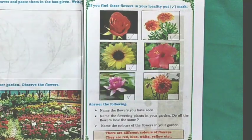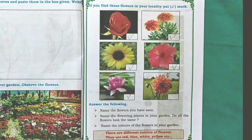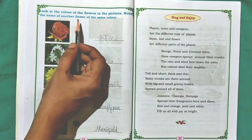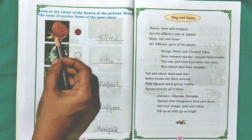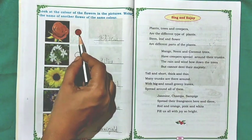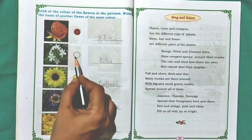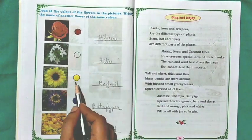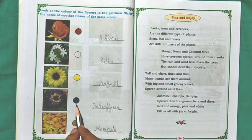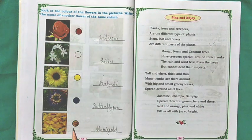There are different colors of flowers — red, blue, white, yellow, etc. Look at the color of the flowers in the pictures and write the name of another flower of the same color. Red color: hibiscus. White: lilies. Yellow: daffodil. Purple: butterfly pea. Orange: marigold.